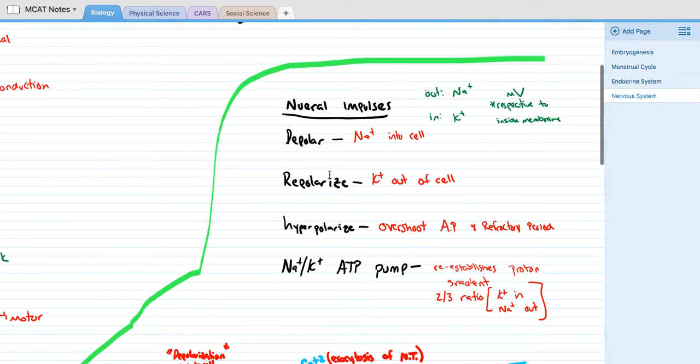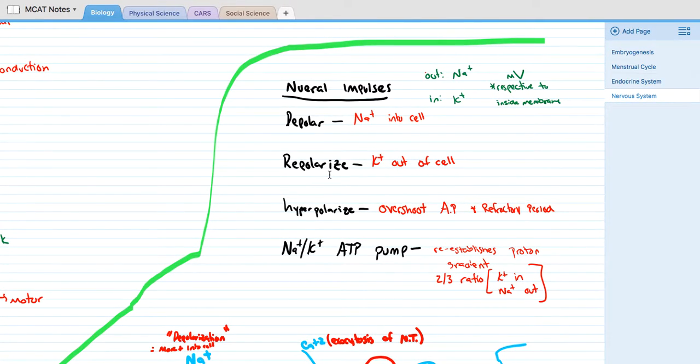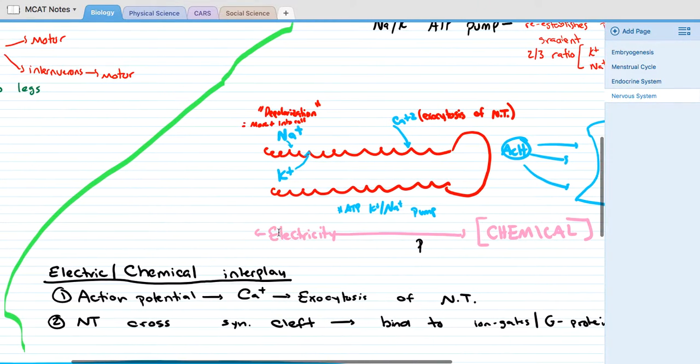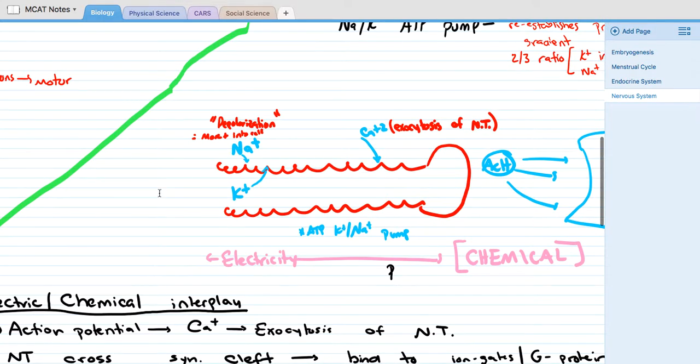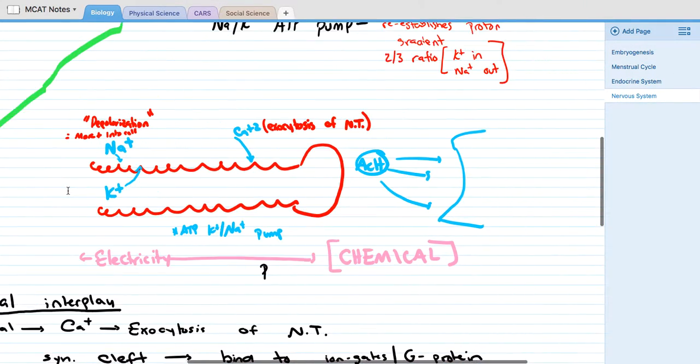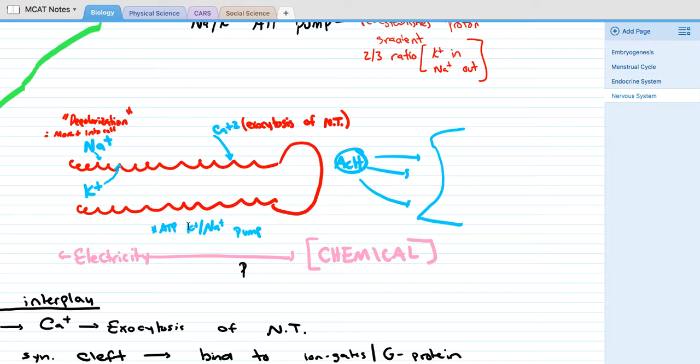The next really key concept of the nervous system is the action potential. This is a diagram of an axon, pre- and post-synaptic cleft. All of the graphs that are produced on the MCAT are relative to the inner membrane. Usually the way a graph will work is going to be something like that, and then it'll hit a peak, it'll go down, and then it'll stabilize.